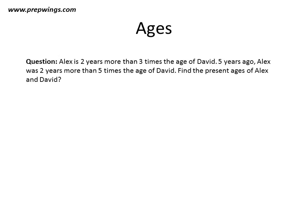So now this is a question that is given to us. Alex is 2 years more than 3 times the age of David. 5 years ago Alex was 2 years more than 5 times the age of David. We have to find the present ages of Alex and David. This is a word problem on ages that we will see how to solve.